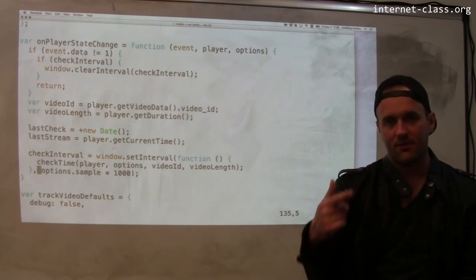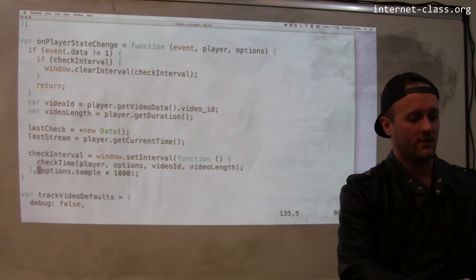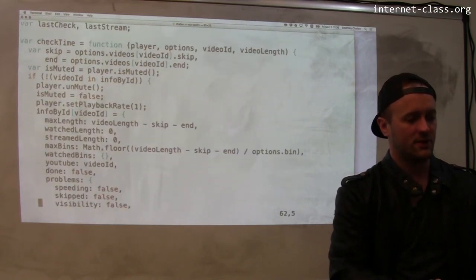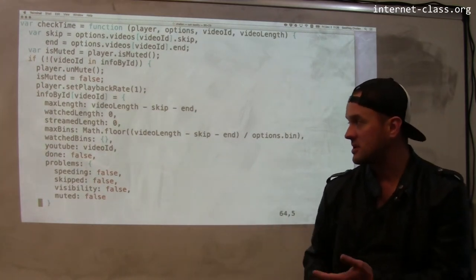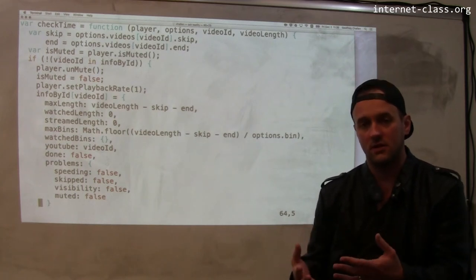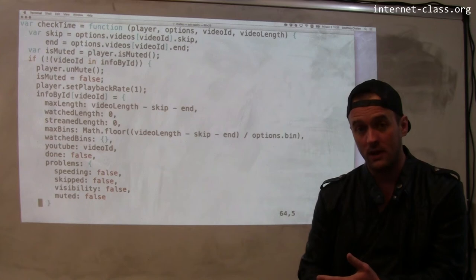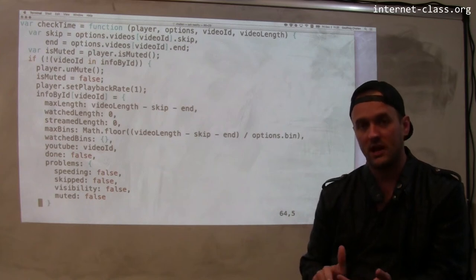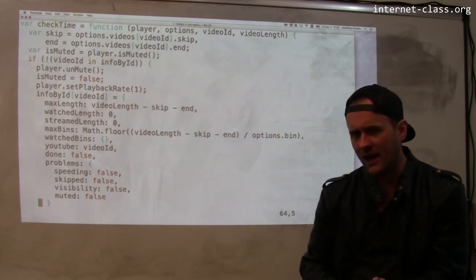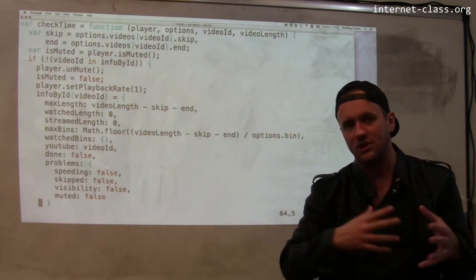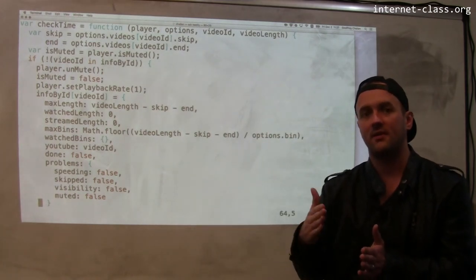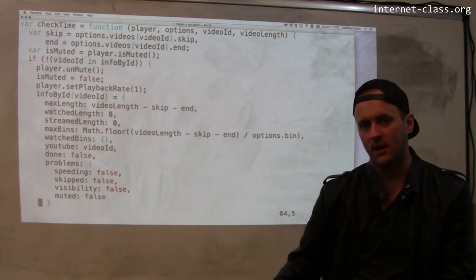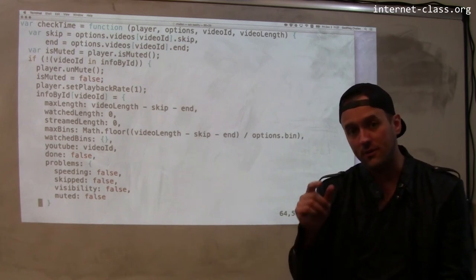And every second the timer fires and essentially checks things about the video state. So when the timer fires, it calls this check time function. And this is the function that really does all the work. And I won't go through this in detail, but what the check time function does is it tries to determine a couple of different things. So it checks if the video is muted at that point. It checks if the video is playing too fast. It essentially does that by recording a couple timestamps and then averaging across them and trying to figure out if the video has advanced ten seconds, but only five seconds of wall clock time have gone by, then you're playing the video a little bit too fast.